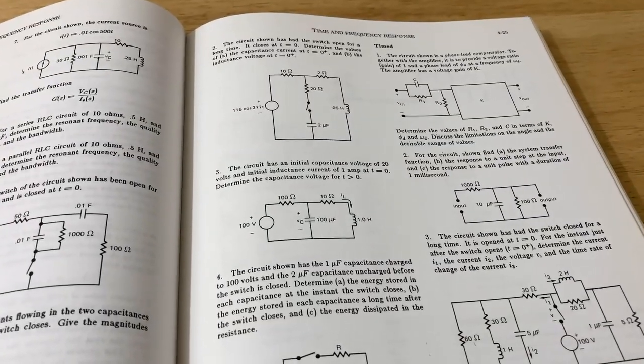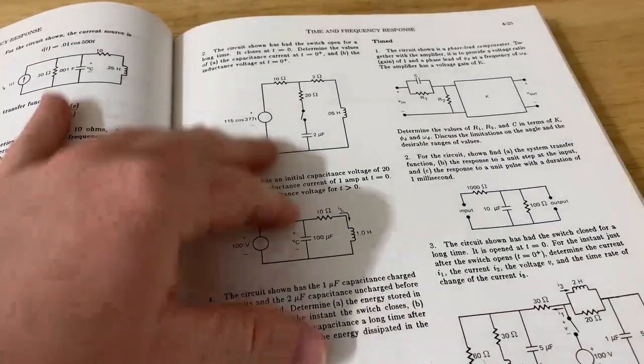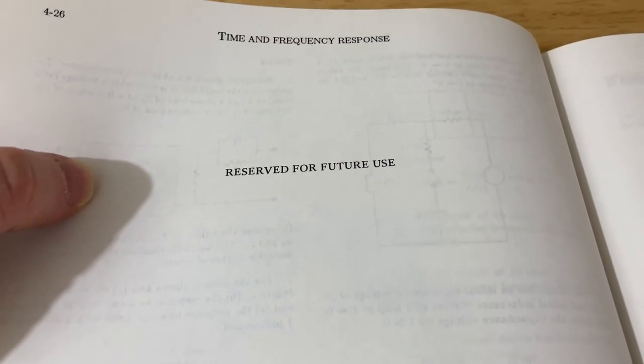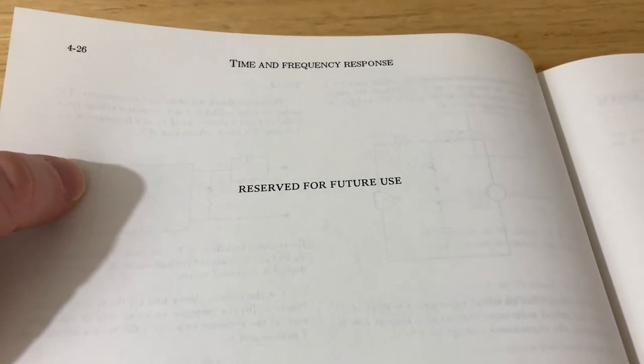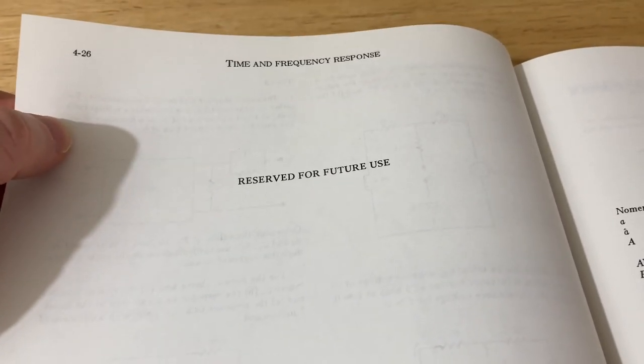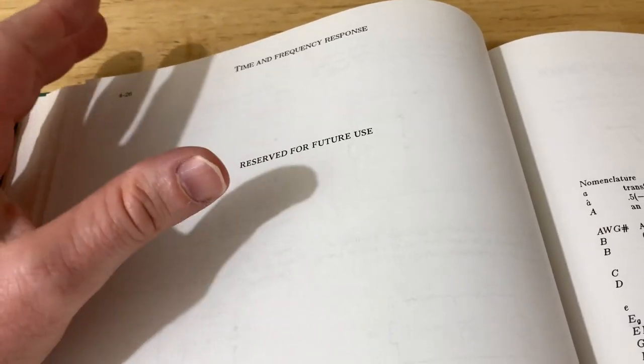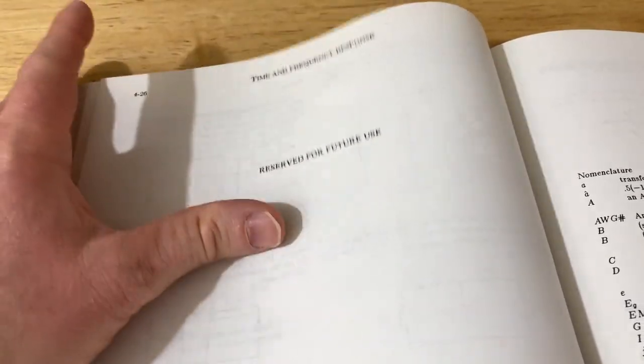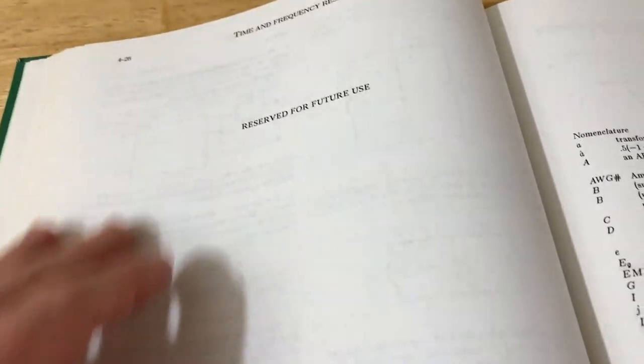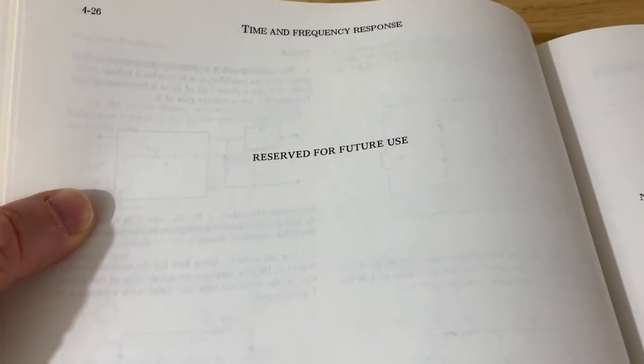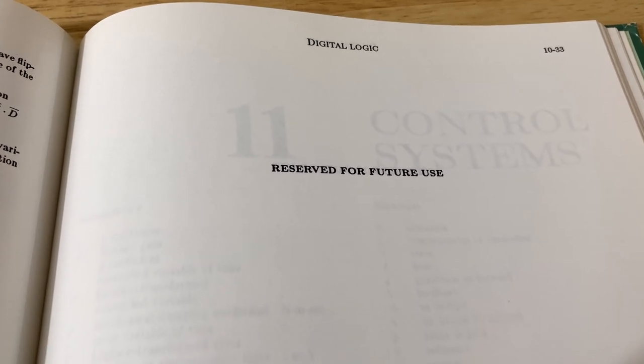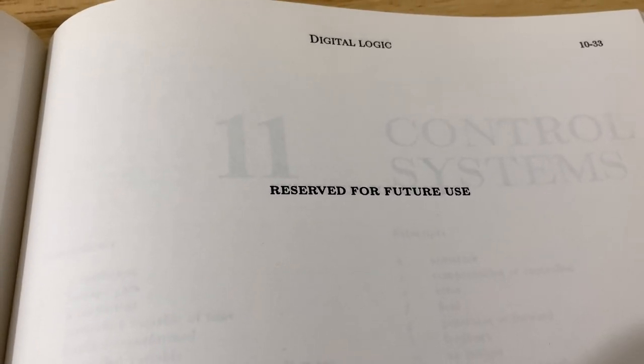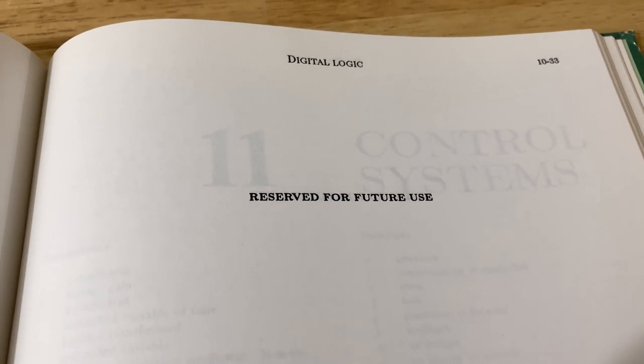So there's something really weird about this book. I'm going to turn the page and look: reserved for future use. So what's happening there? Is it like they have to reserve a page? Perhaps when they update the edition, something will go here. Can they not just add more pages? It's very strange that they did that. Here they do it again on the section which covers digital logic. It says reserved for future use. Really weird.